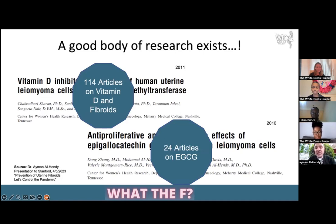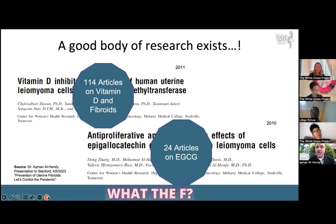What are these steps? We published that vitamin D can kill fibroid cells — we published that in 2011, and since then 114 articles from other groups confirmed our work. We also published that a specific extract of green tea called EGCG can also kill fibroid cells, and at least 24 articles also confirmed our work.